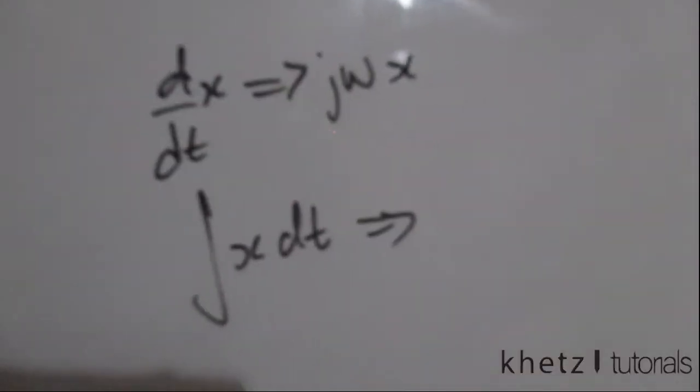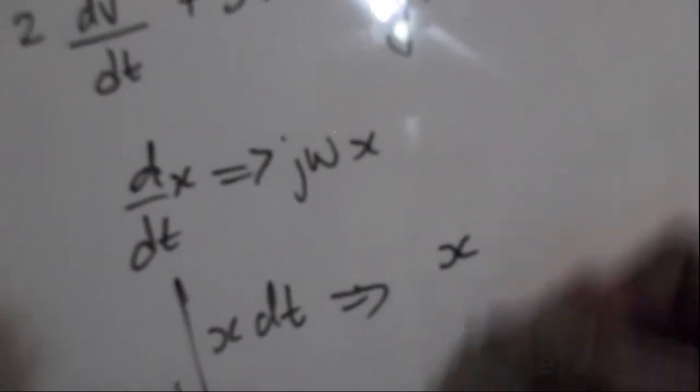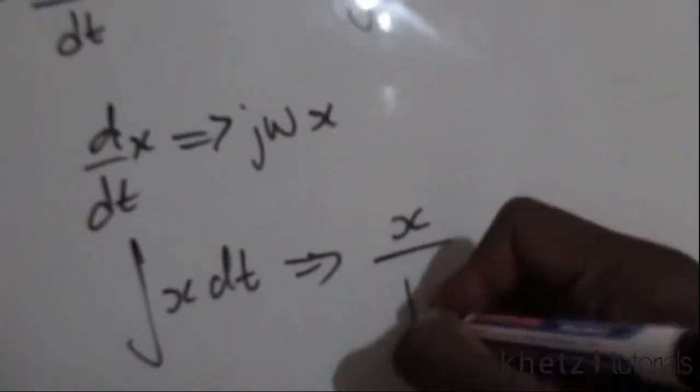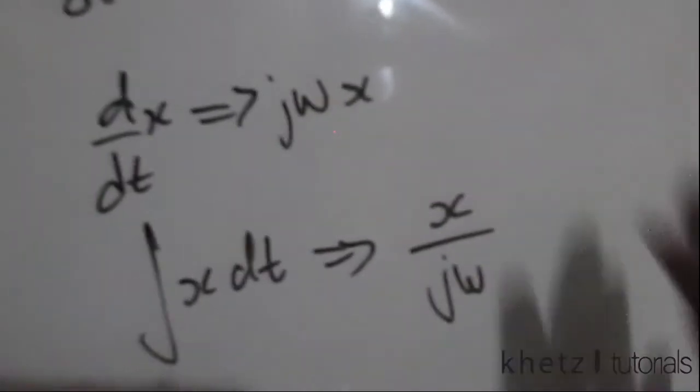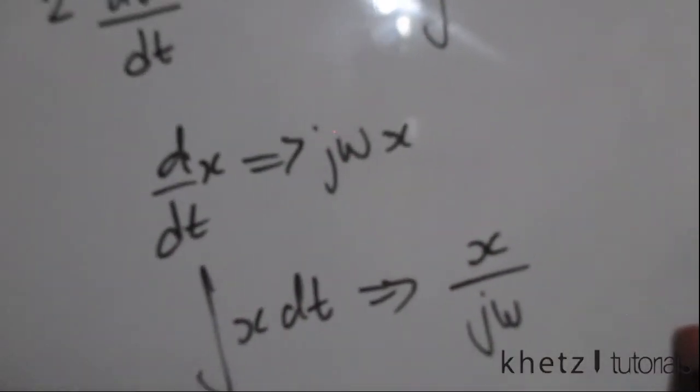But if you want to integrate, then in the complex form you're going to have your variable at the top and jω at the bottom. So this is basically all we're going to do in this question and this is going to lead us to the final answer.